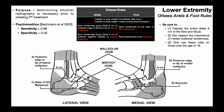Also for the ankle: bony tenderness along the distal six centimeters of the posterior edge of the tibia or the tip of the medial malleolus. This is analogous to what we saw for the lateral malleolus. We go down to the inferior base of the medial malleolus, up six centimeters, and if there's tenderness to palpation anywhere in that posterior distribution, that constitutes a need for radiography.